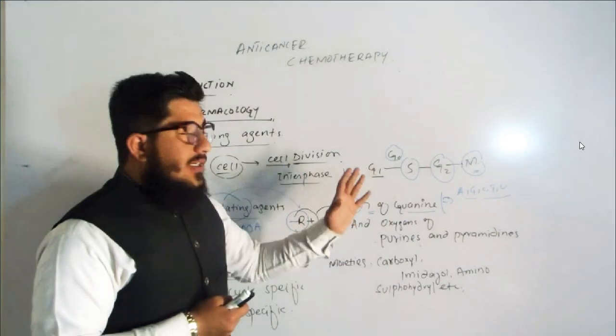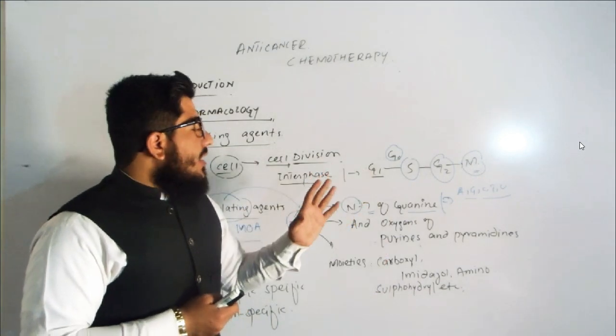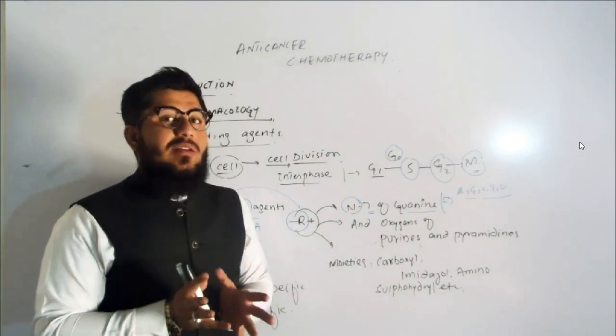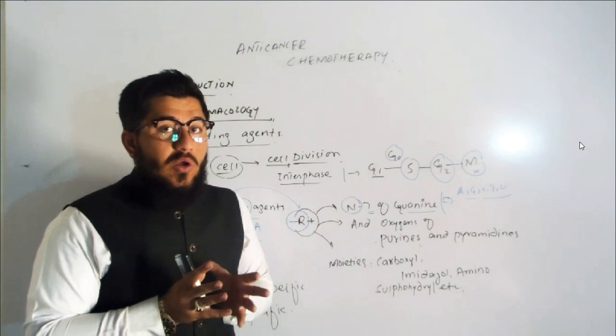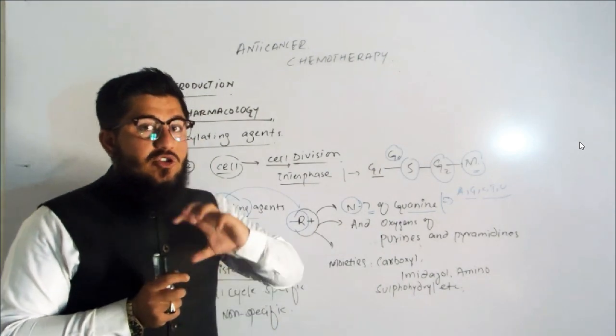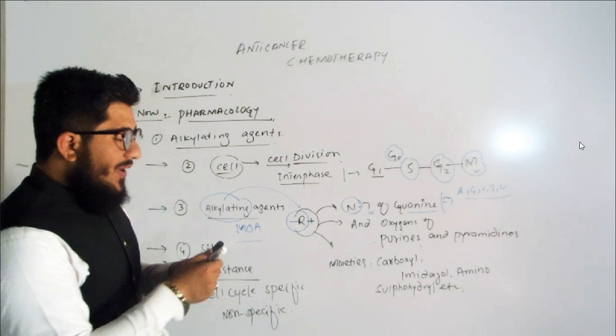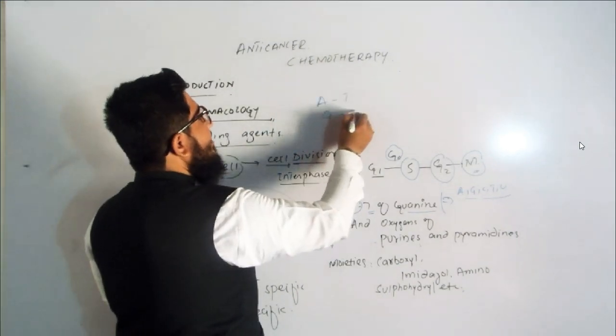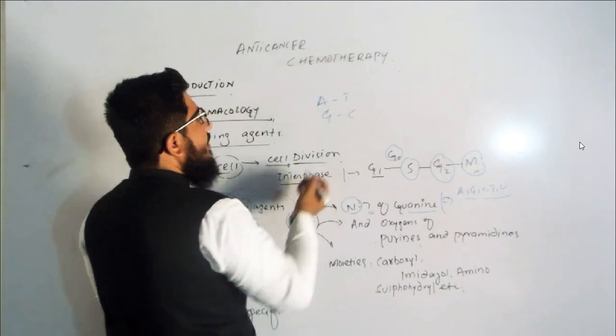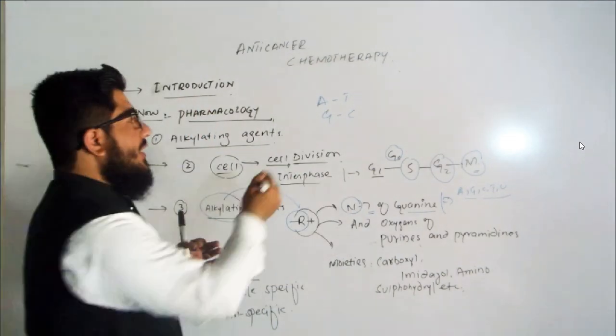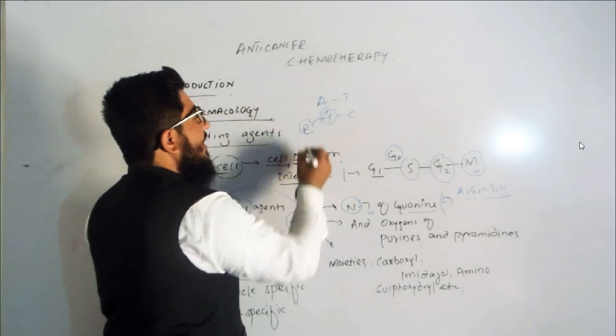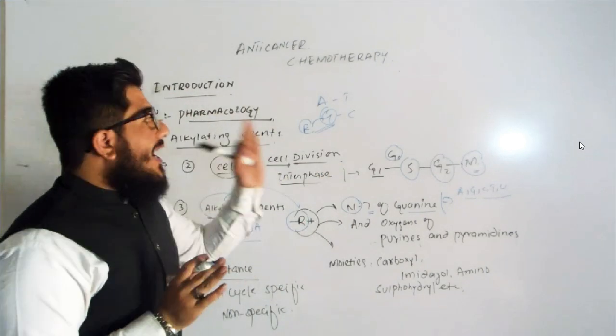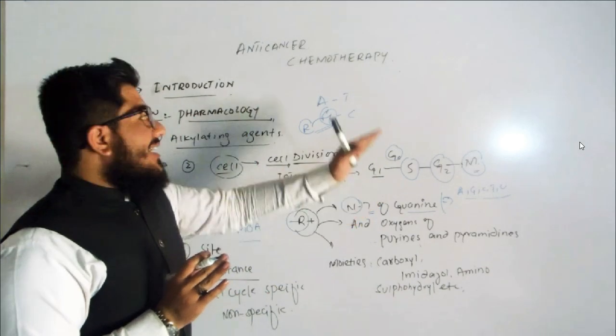After adding, what will happen? If alkylating agents add the alkyl group to these moieties, to guanine, to purines and pyrimidines, or to carboxyl, imidazole, amino—what happens then? You know that if something is transformed, before we were having adenine combining with thymine, and guanine with cytosine. Now what will happen? You transformed the structure of guanine by adding the alkyl group. Now this guanine is no more able to bind with cytosine.